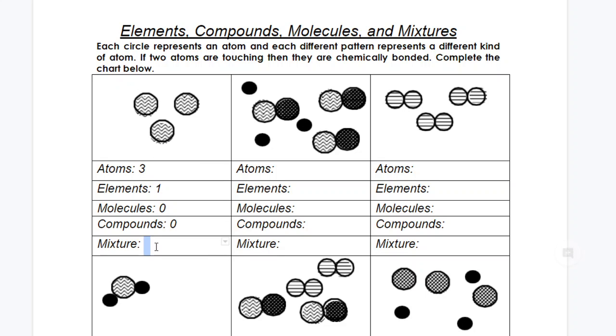Compounds would be two different elements bonded together, which I don't have, so I have zero of those. A mixture would be different atoms mixed together, and I only have one kind and one element, so this would not be a mixture.